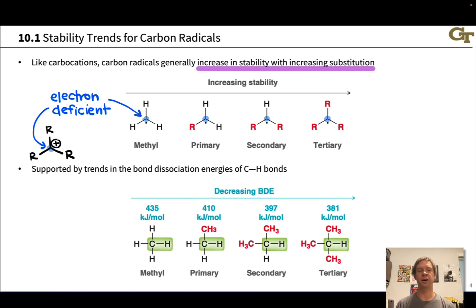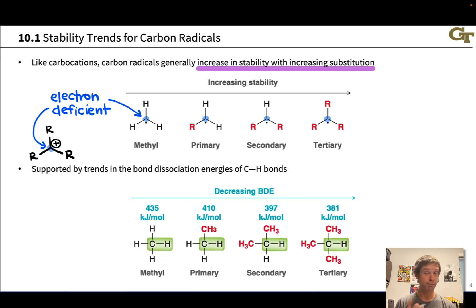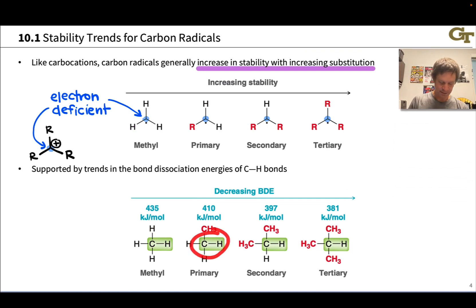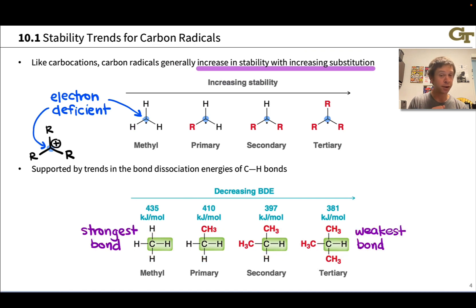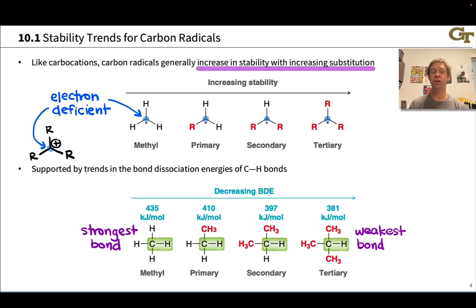This trend is supported by the bond dissociation energies of C–H bonds at different substitution patterns. We can look at the C–H BDE for methane, ethane, propane at the secondary carbon, and butane at the tertiary carbon. As we go from a methyl C–H to primary to secondary to tertiary, we go from the strongest bond in methane to the weakest bond in tert-butane. The reason for this has to do with the stability of the carbon radical generated when we split each bond homolytically — this is essentially what the BDE is telling us: the energy required to split each of these bonds homolytically.